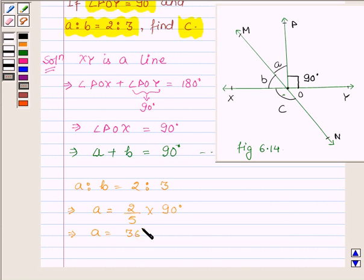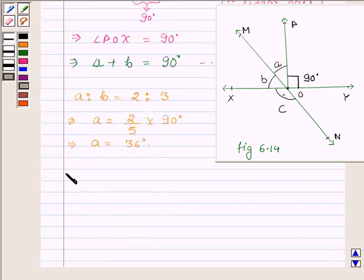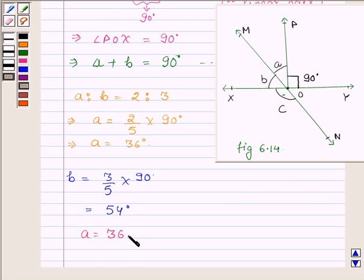Now let us find b. b will be 3 upon 5 of 90 degrees, which is equal to 54 degrees. So a is equal to 36 degrees and b is equal to 54 degrees.